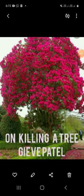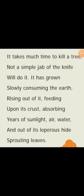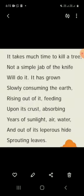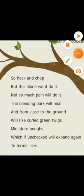I will read out the poem — listen carefully — and then I will give an explanation of the poem and poetic devices. 'On Killing a Tree' written by Gieve Patel. It takes much time to kill a tree. Not a simple jab of the knife will do it. It has grown slowly consuming the earth, rising out of it, feeding upon its bark, absorbing years of sunlight, air, water, and out of its leprous hide, sprouting leaves.